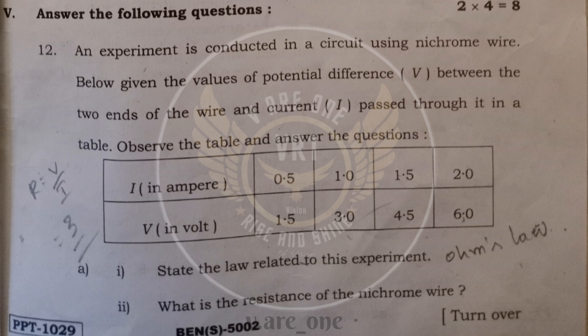And what is the resistance of nichrome wire? When you calculate the resistance by using potential difference divided by current you will get the answer 3. So the resistance of the nichrome wire is 3.